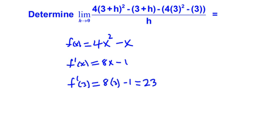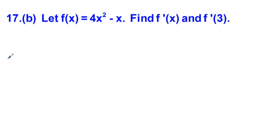Going to 17b, we see that 17b is exactly that problem we just worked out. So f'(x) would again be equal to 8x minus 1. Therefore, f'(3) would be equal to 8 times 3 minus 1, which equals 23.